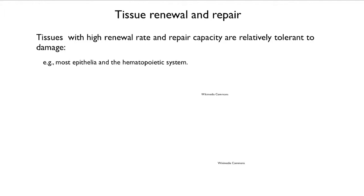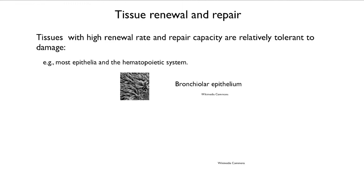Tissues with a high renewal rate and a repair capacity are relatively tolerant to damage. That would be most epithelia and the hematopoietic system — that is the system in the bone marrow that produces blood cells. Here is an example of bronchiolar epithelium, which has high renewal rate, high repair capacity, and is relatively tolerant to damage. The same would be true of the skin epithelium.